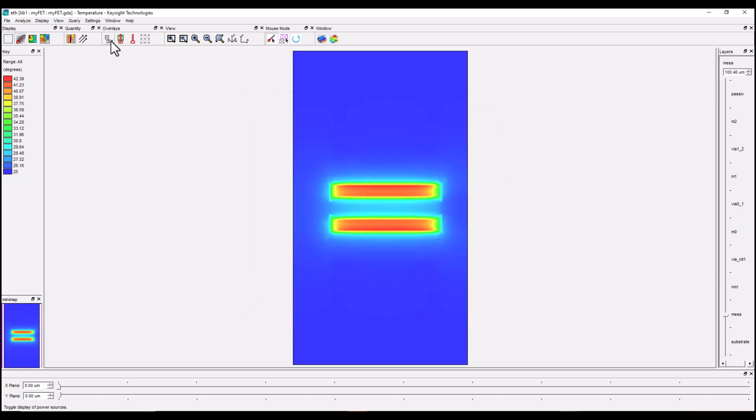If you want to display the heat sources or the power sources you can click and now you can see these are the two power sources modeled for one FET device which I just used and that information will be shown to you there.